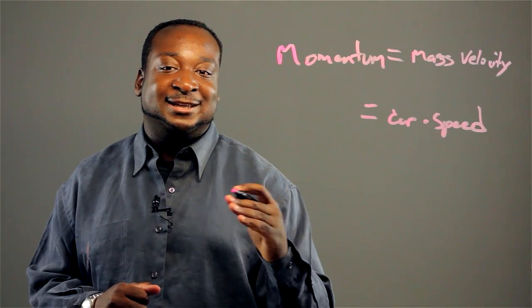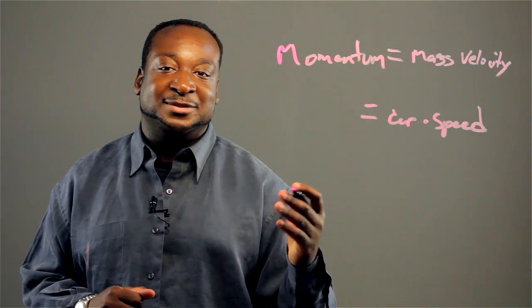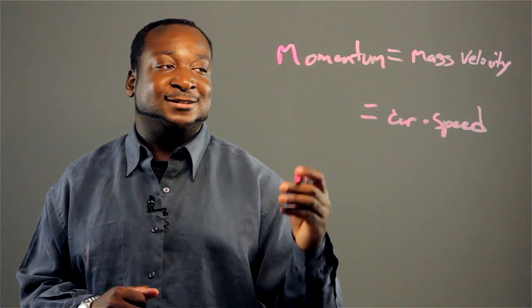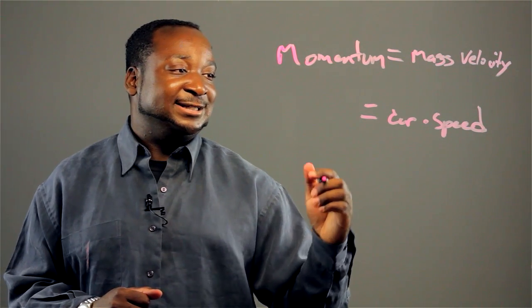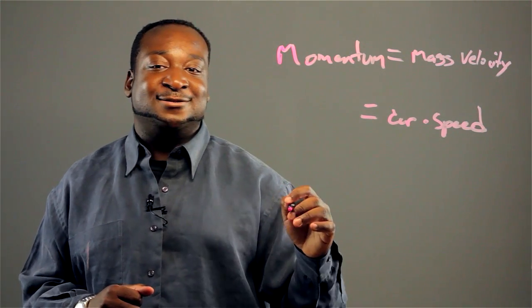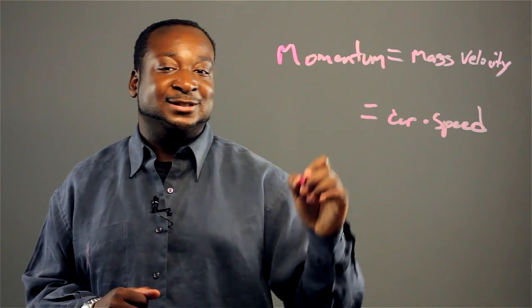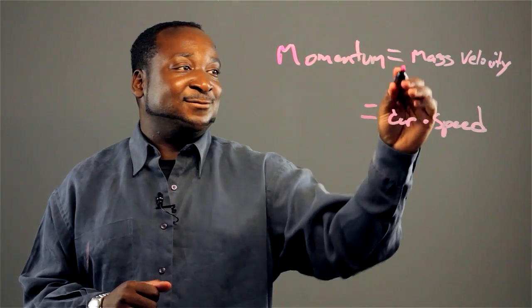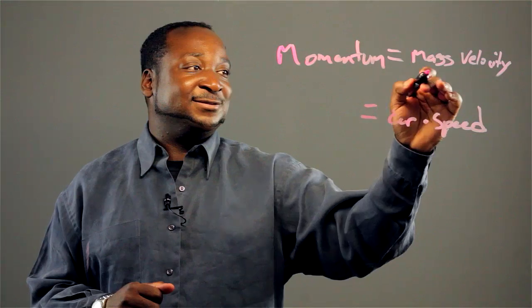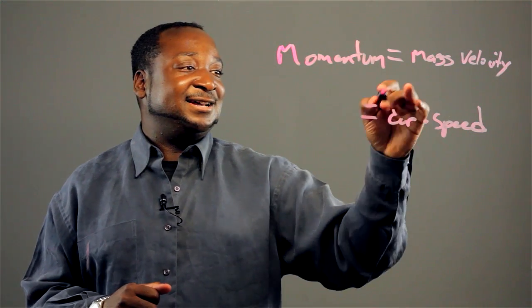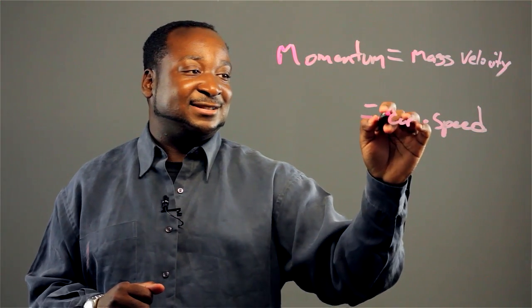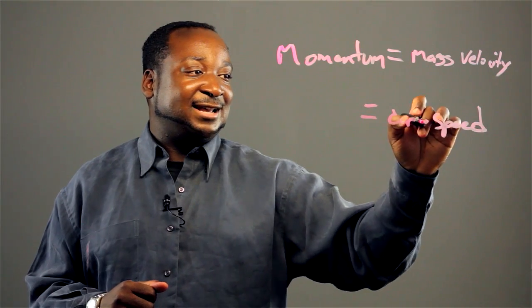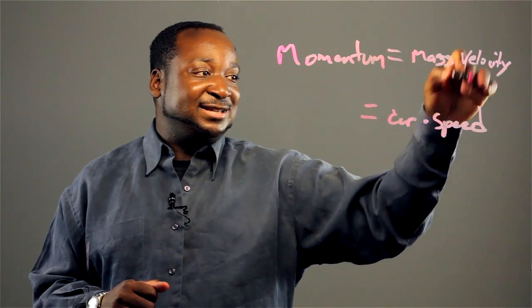Try to relate it to things that you know, things you're familiar with. And also, it's good to make side notes of the formulas when you write them down. You know, the way I wrote momentum equals mass times velocity, just put down side notes like the car, how much it weighs, and the speed of the car.